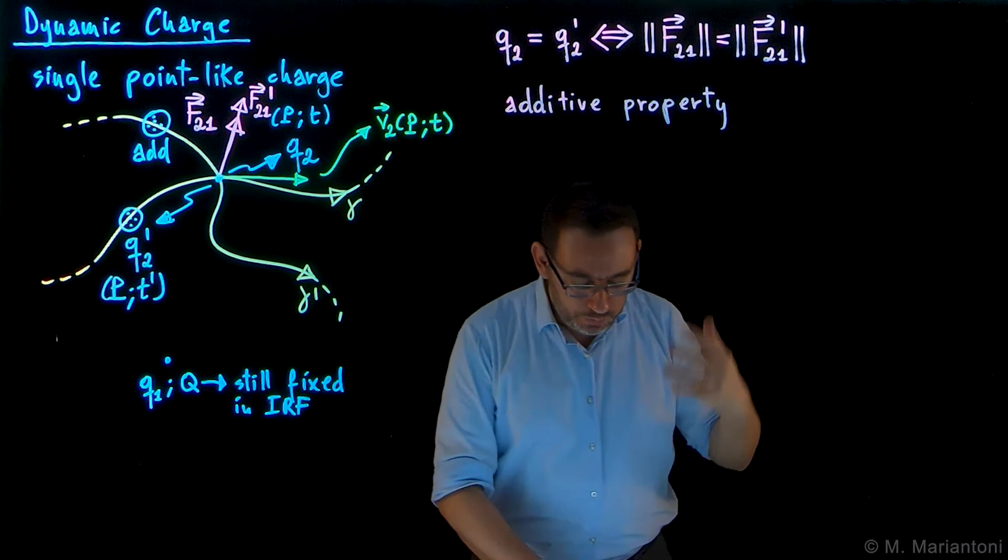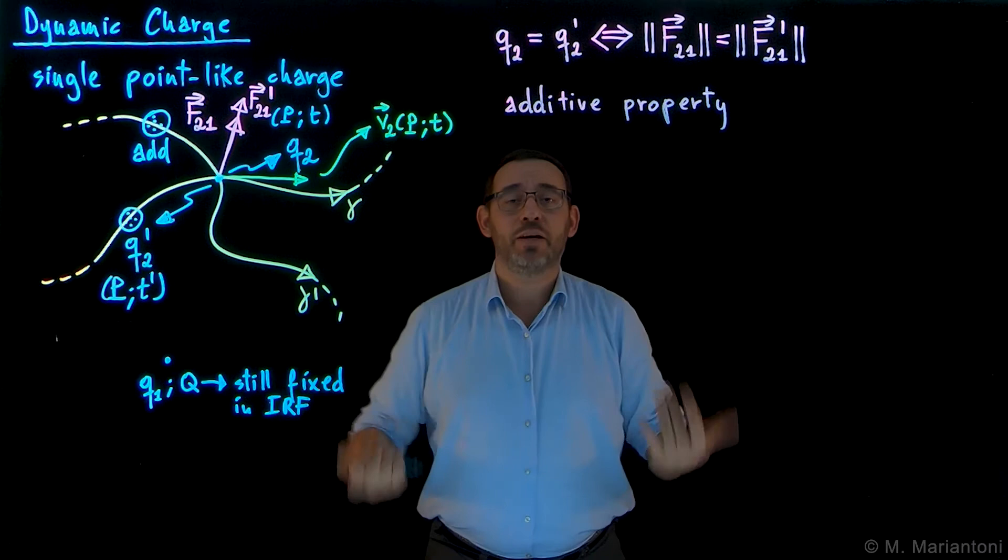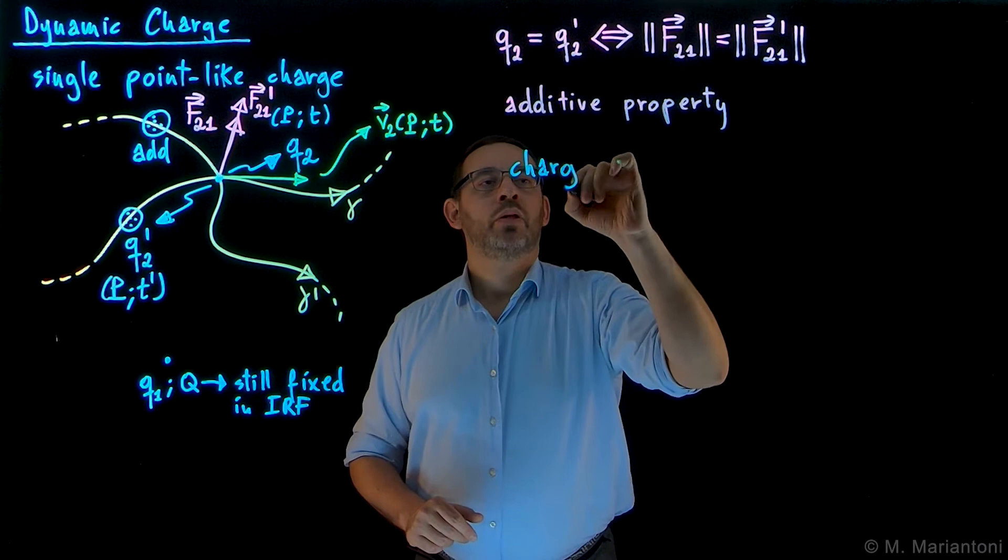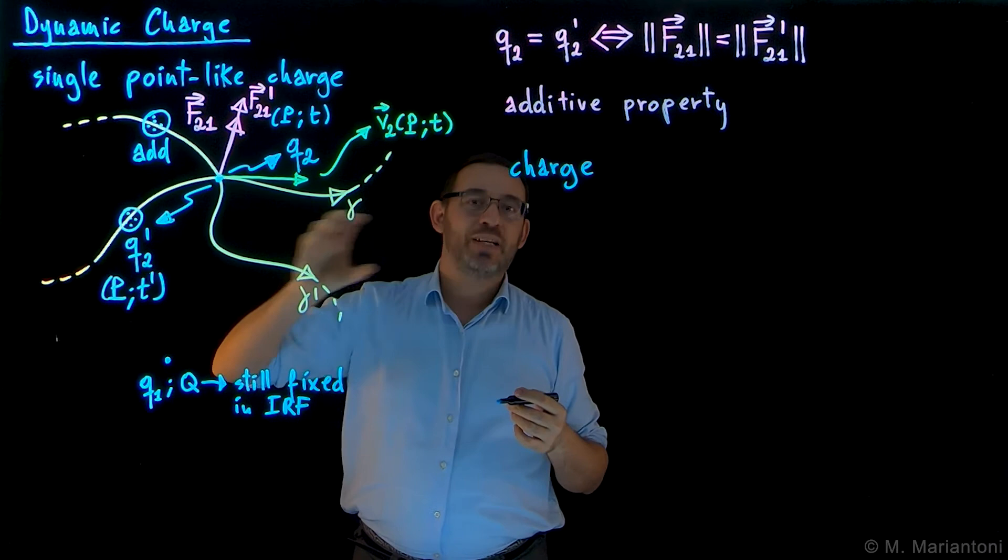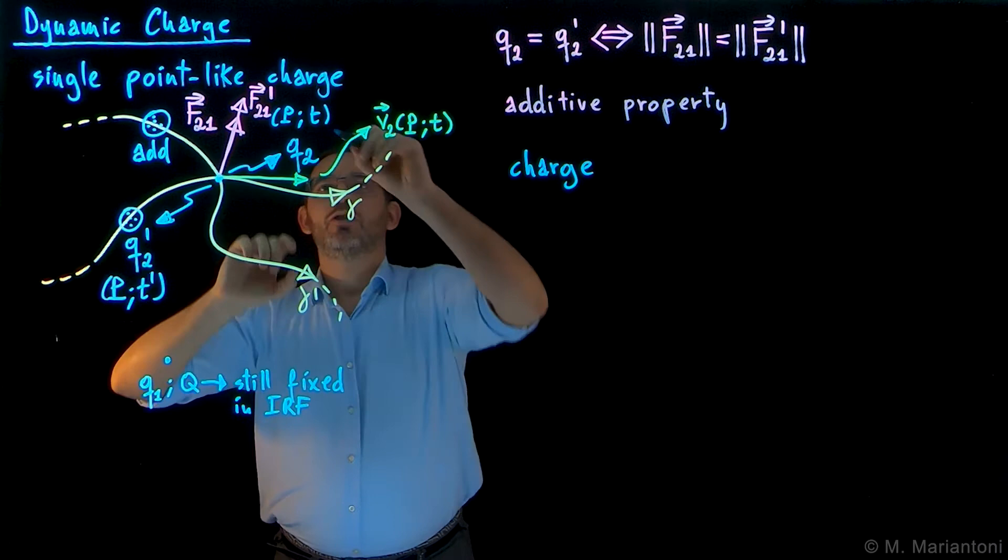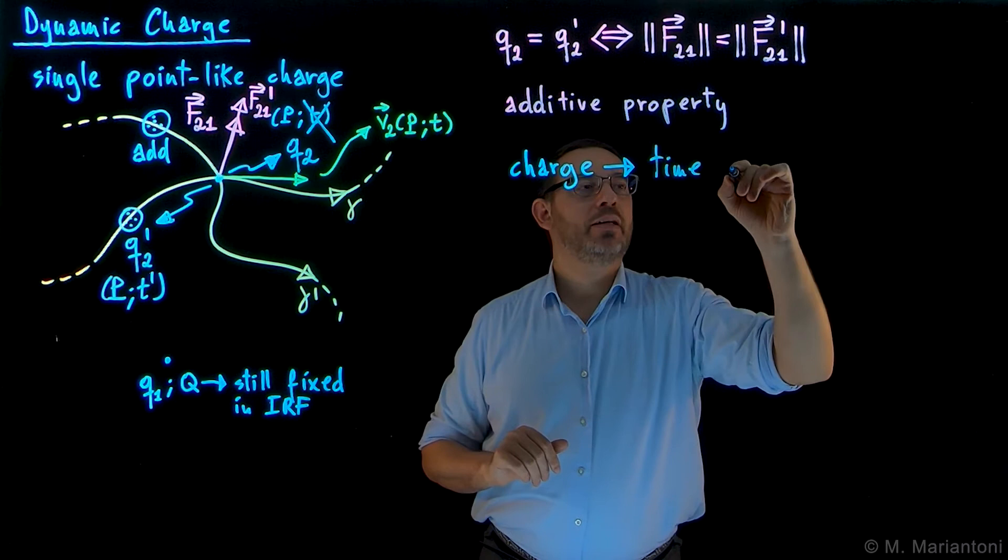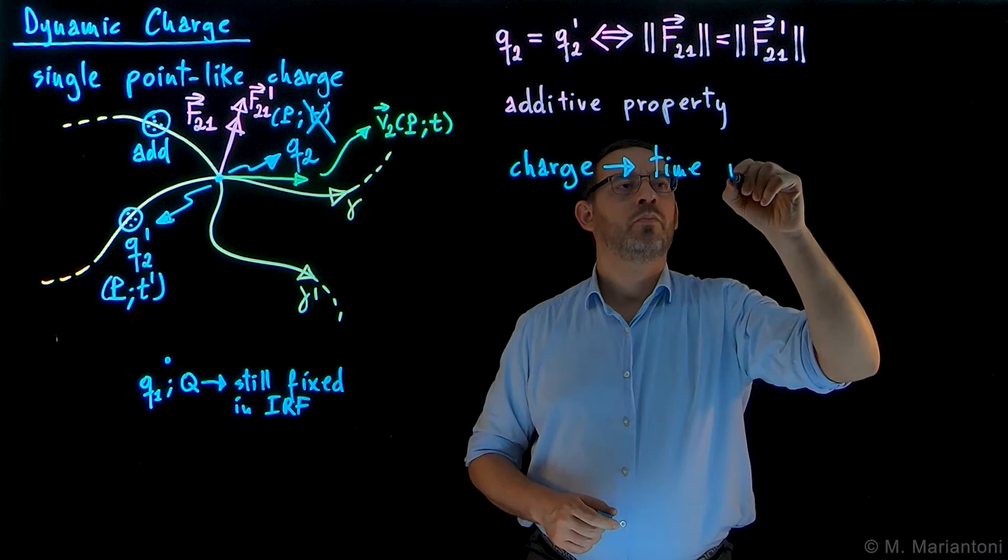So under these conditions, people refer to charge as a relativistically invariant quantity. A fundamental property of charge is that charge is relativistically invariant. It doesn't matter if I perform these measurements with a moving charge or with a static charge, I obtain the same charge. So if this charge, instead of moving in space, I keep it fixed - I remove from the problem the time dependence - I measure the same charge. So charge is said to be time invariant, relativistically time invariant to be completely precise.